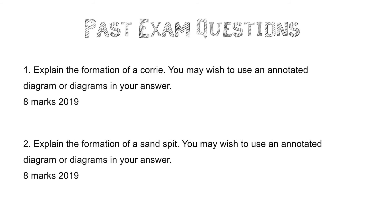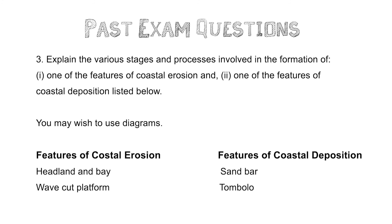Here are some examples of questions from Higher Geography papers. All of them require candidates to explain the formation of glacial or coastal landscape features. You will need to give a full explanation of how they form, including all the processes discussed in this video. Note that there's always the opportunity to use annotated diagrams in your answer, which can help you show your understanding of the processes involved.